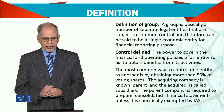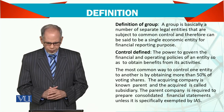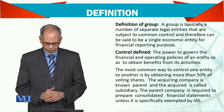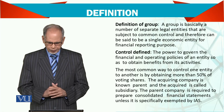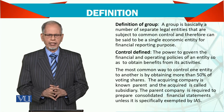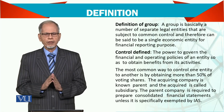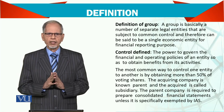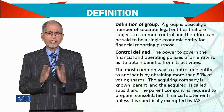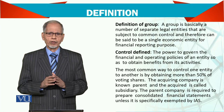The acquiring company — the parent company — is known as the parent, and the acquired is called the subsidiary. The parent company is required to prepare consolidated financial statements unless it is specifically exempted by any other IAS. The parent company is basically responsible to prepare the group accounts. It doesn't mean they don't prepare their separate accounts — they have to prepare their separate accounts as well.